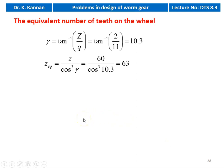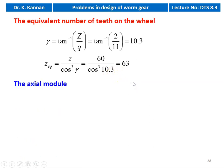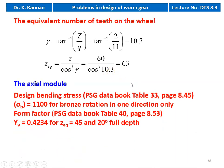We calculate the equivalent number of teeth on the wheel. First we find the lead angle gamma = tan⁻¹(number of starts / Q) = tan⁻¹(2/11) = 10.3°. The equivalent number of teeth Z_eq = Z / cos³(gamma) = 60 / cos³(10.3°) = 63. Then we calculate the axial module. The design bending stress is taken from table 33, page 8.45: sigma_b = 1100 for bronze, rotation in one direction only.